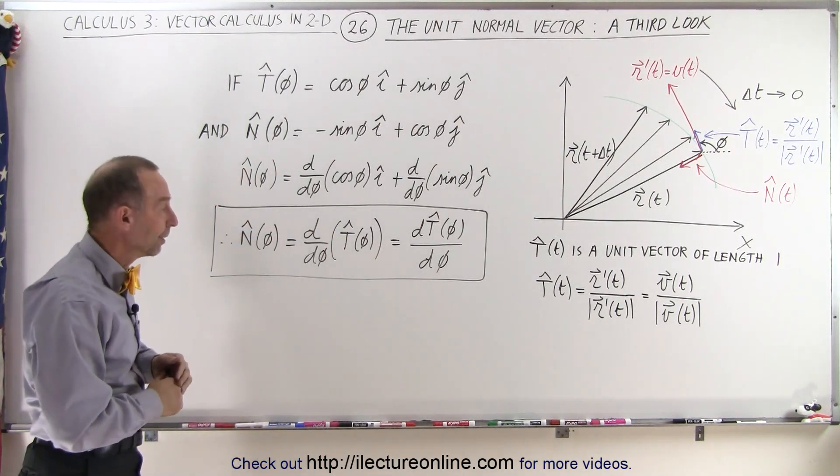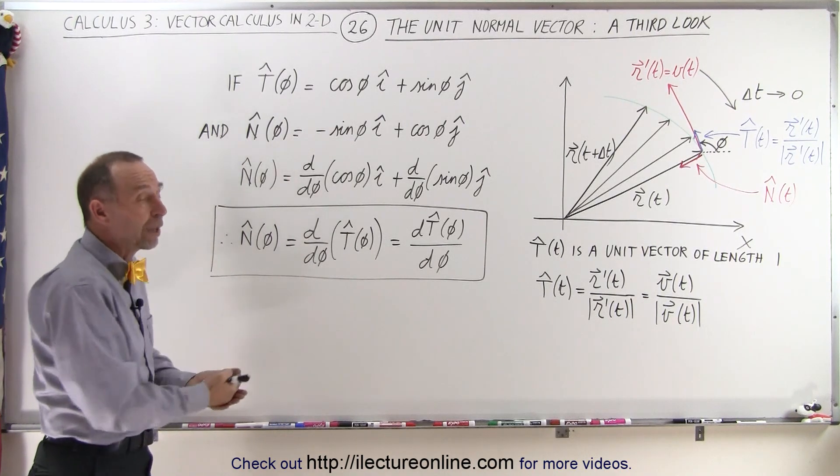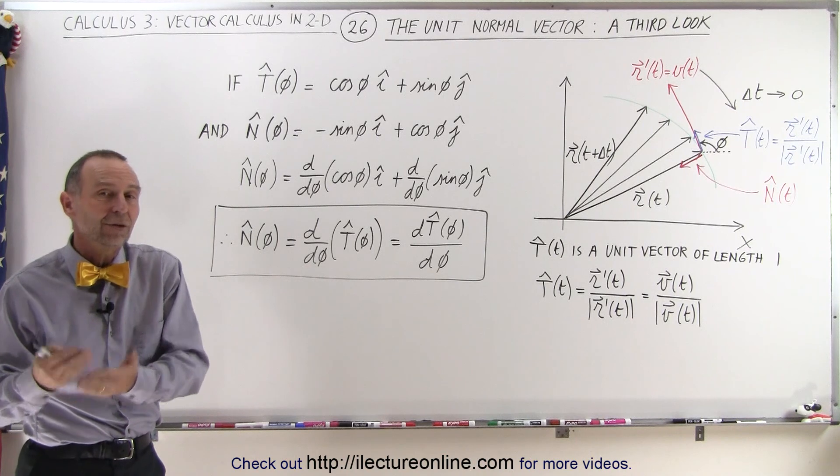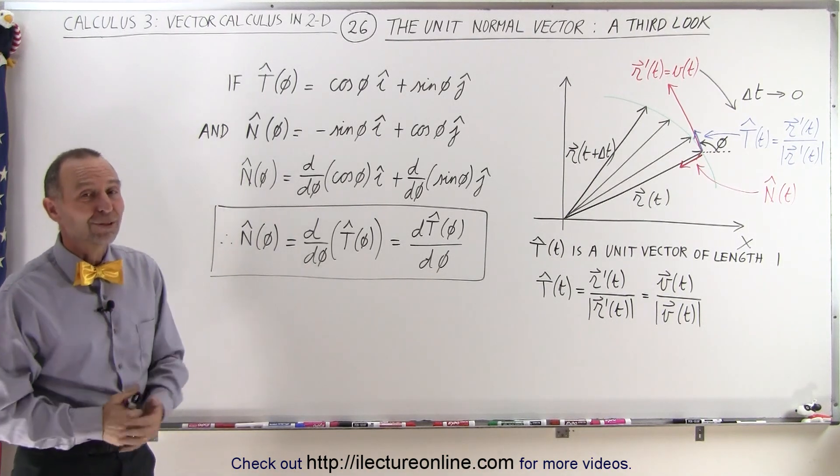We can of course write it like that as well, but that's kind of interesting. Once we've defined the unit tangent vector, all we have to do is take the derivative of that to get the unit normal vector. And that's how it's done.